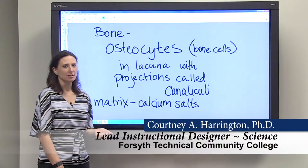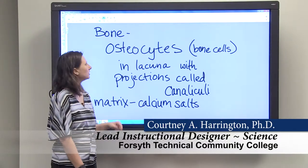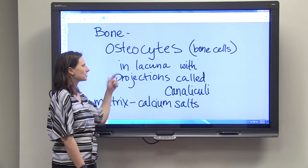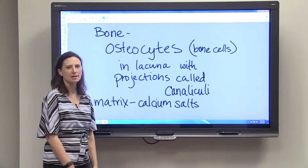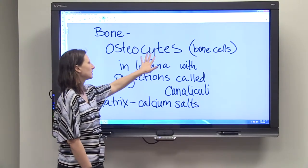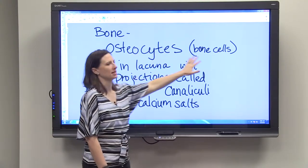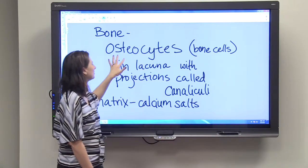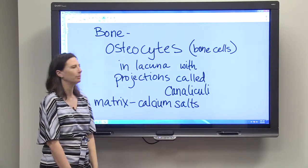Today we're going to talk about bone, which is a type of connective tissue. Bone is made up of osteocytes. If you remember when we talked about other tissue types, we knew that the suffix cytes means cells, and the prefix osteo refers to bone.